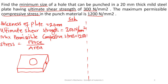We will call the diameter of the hole as d, since we want to find the size of the hole. Let's assume this is the circular hole we are going to construct, going through the 20 mm thick plate. The diameter is labeled as d, and the thickness is t. This is the free body diagram — I've drawn the hole again here so we can see it clearly.